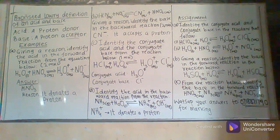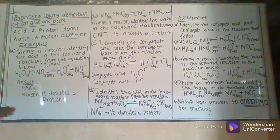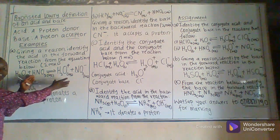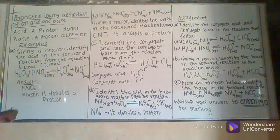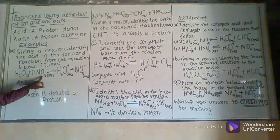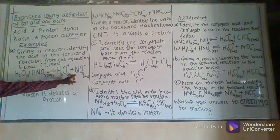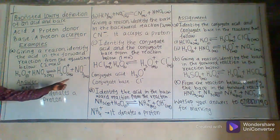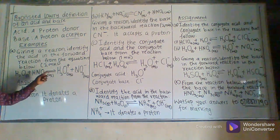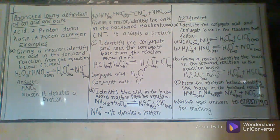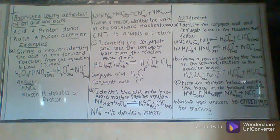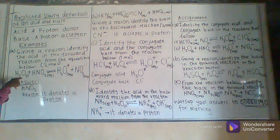In this reaction, it is taking place in two parts. There is what we call the forward reaction that is proceeding from left to right, and there is the backward reaction that proceeds from right to left. The forward reaction involves H2O reacting with HNO3 to form H3O positive and NO3 negative. The backward reaction involves NO3 negative combining with H3O positive to form H2O and HNO3.